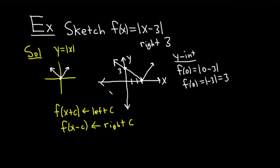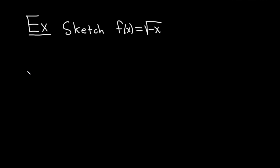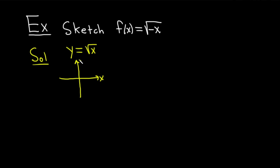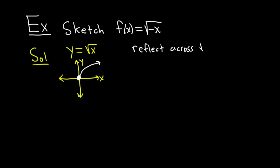Let's do one more example. We are going to sketch the graph of f of x equal to the square root of negative x. The function we're working with is the square root function, y equals the square root of x. This graph starts at the origin and goes to the right, growing upward but very slowly. Whenever you have a negative in front of the x, you reflect across the other axis — in this case, we're going to reflect across the y-axis.